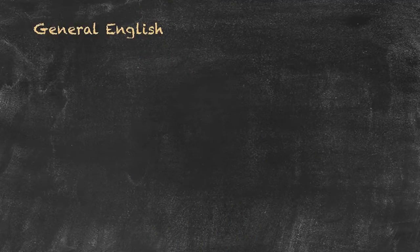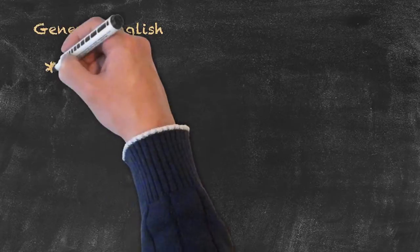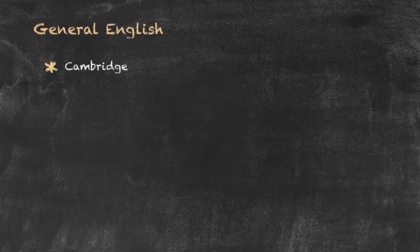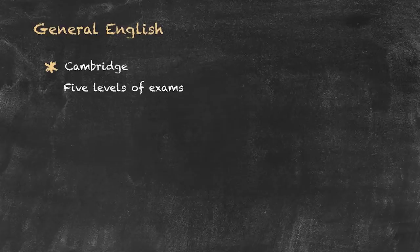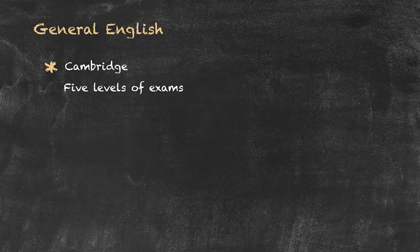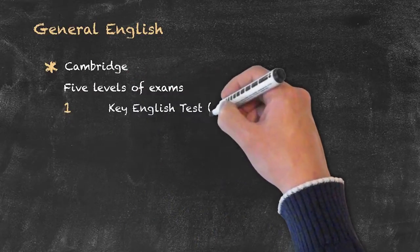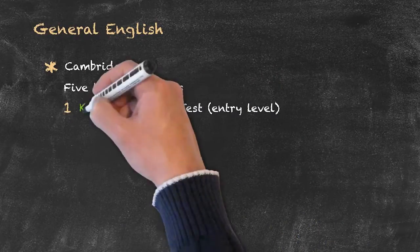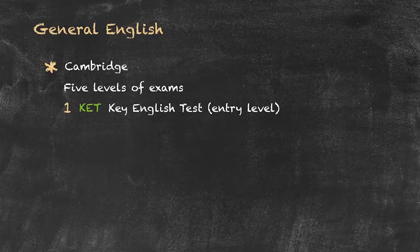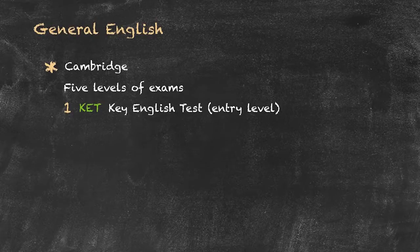Our first main category was called general English, and there are a number of organisations or companies that offer these types of exams. Perhaps the most well-known is the Cambridge suite of examinations. Within the Cambridge suite, there are five different examinations at five different levels. The entry-level examination is known as the Key English Test, often known by its acronym KET. This is an entry-level examination, and both this and the next test are really used to show that people are ready for the third level of the Cambridge test.